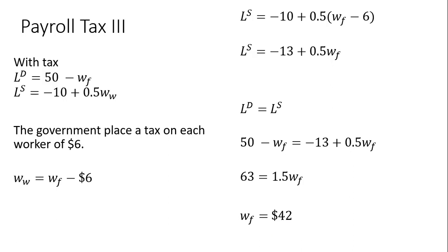We saw that in the first two examples, so nothing has changed here. Yes, we changed the statutory incidence, but it didn't change the economics of what's happening, how this payroll tax is ultimately split between firms and workers. And as far as workers are concerned, they get this $42 from the firm, but they're not done. They have to write the check to the government for $6, leaving workers on an after-tax basis with $36.